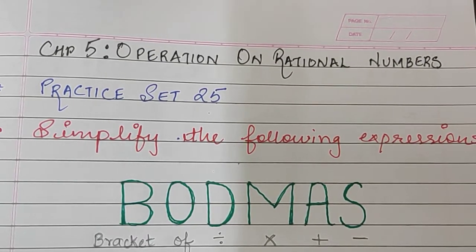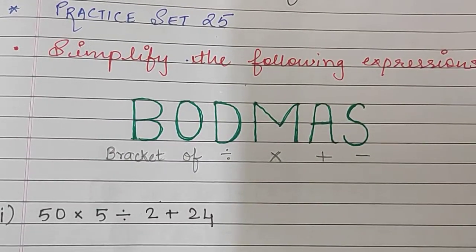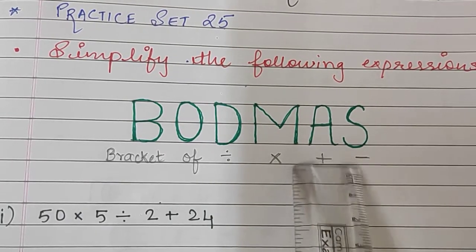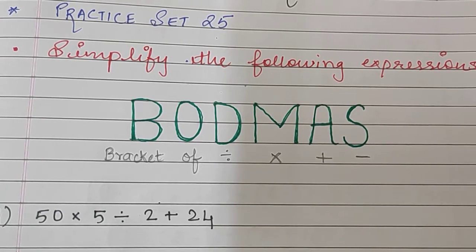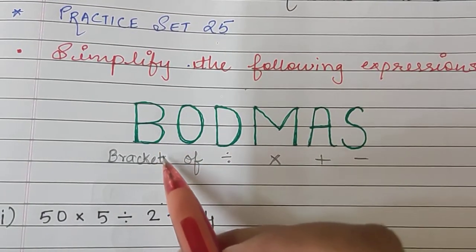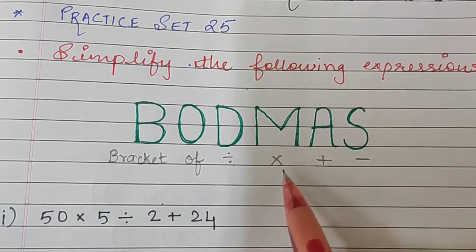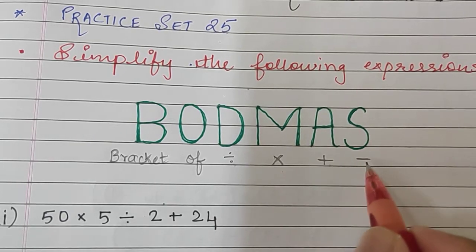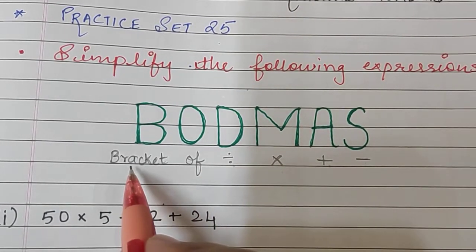To understand how to simplify these kinds of equations, we have to understand the BODMAS rule. BODMAS rule is very simple — it is an abbreviation for Bracket Of, Division, Multiplication, Addition, and Subtraction. You have to remember this BODMAS rule.